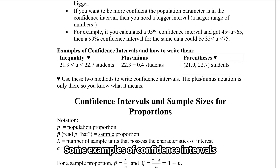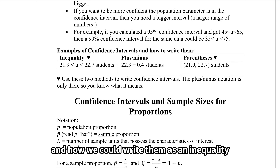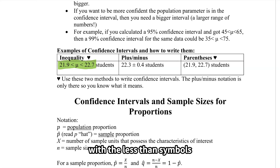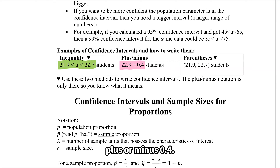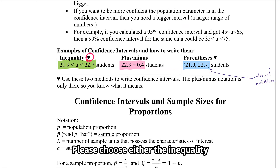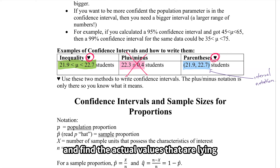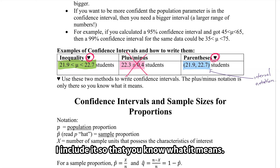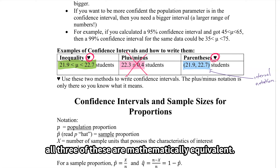Some examples of how to write confidence intervals: as an inequality with the population parameter in the middle, such as 22.3 ± 0.4; or with parentheses using interval notation, such as (21.9, 22.7) students. Please choose either the inequality or the parentheses notation — don't use plus-minus. Go ahead and find the actual values at the ends of the intervals. All three representations are mathematically equivalent.